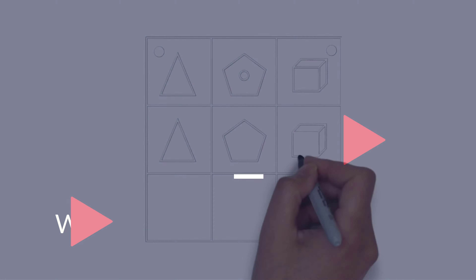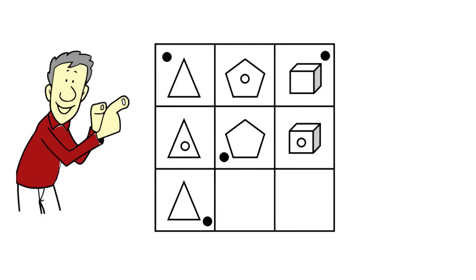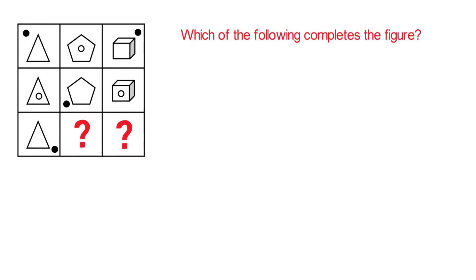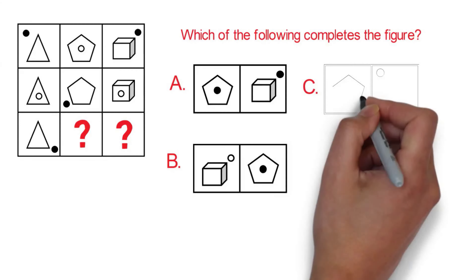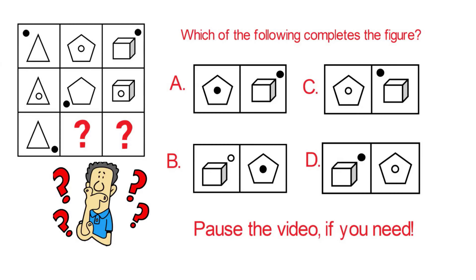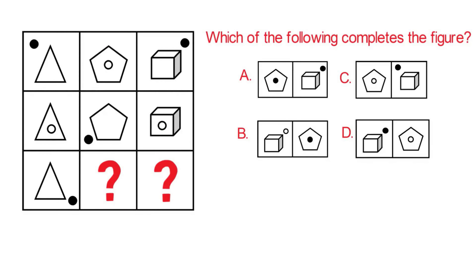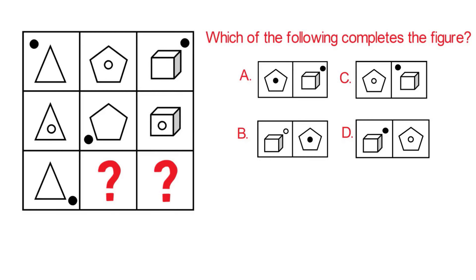There is a very high chance that you will see this type of question on the test. You're presented with a three-by-three matrix containing triangles, pentagons, and cubes. You have two spaces with missing shapes and need to select from four possible choices: A, B, C, and D. Give yourself 10 to 30 seconds. To solve these types of challenges, always look for patterns — there are multiple patterns present here, and detecting at least one will allow you to find the solution.